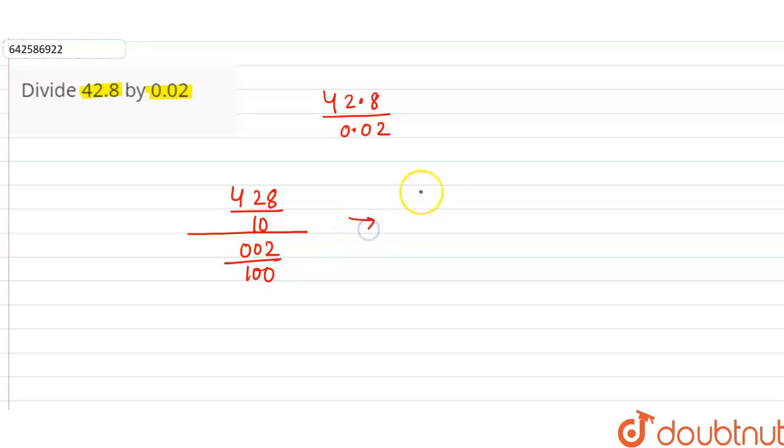Now what we have to do is 428 divided by 10, and in division we can convert it into multiplication by reciprocating the denominator.